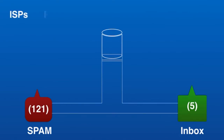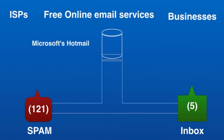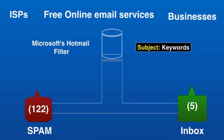ISPs, free online email services, and businesses use email spam filtering tools to protect their employees and networks. For example, one of the simplest and earliest versions of a spam filter — like the one used by Microsoft's Hotmail — was set to watch out for particular keywords in the subject lines of messages. An email was excluded from the user's inbox whenever the filter recognized one of the specified keywords.